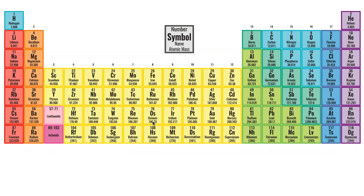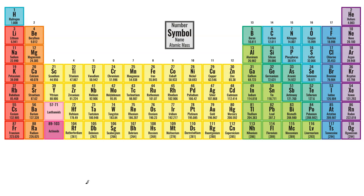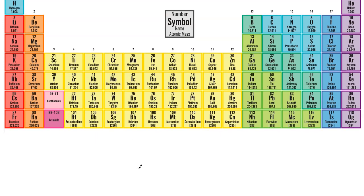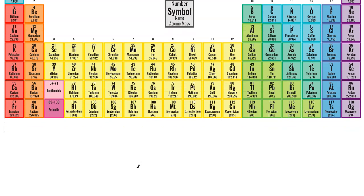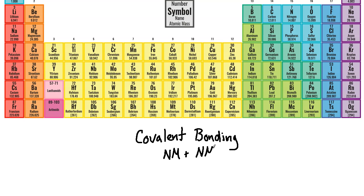This is Lewis structures 101 for beginners. Lewis structures can be applied to any atom or compound, but generally we reserve them for covalent bonding. Last time I covered ionic bonding, which involves a metal and a non-metal. Now we're starting to talk about covalent bonding.